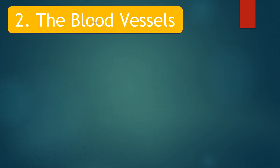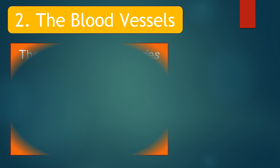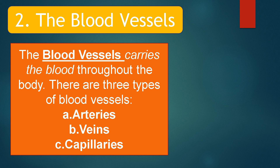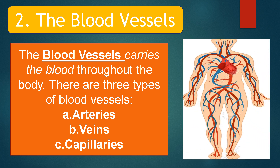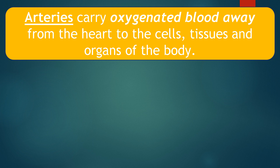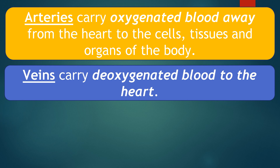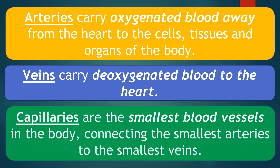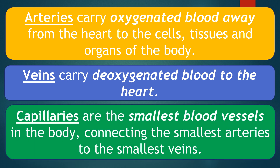The second major part are the blood vessels. The blood vessels carry the blood throughout the body. There are three types of blood vessels: the arteries, the veins, and the capillaries. Arteries carry oxygenated blood away from the heart to the cells, tissues, and organs of the body. The veins carry the oxygenated blood to the heart. The capillaries are the smallest blood vessels in the body, connecting the smallest arteries and the smallest veins. It is the actual site where gases and nutrients are exchanged.